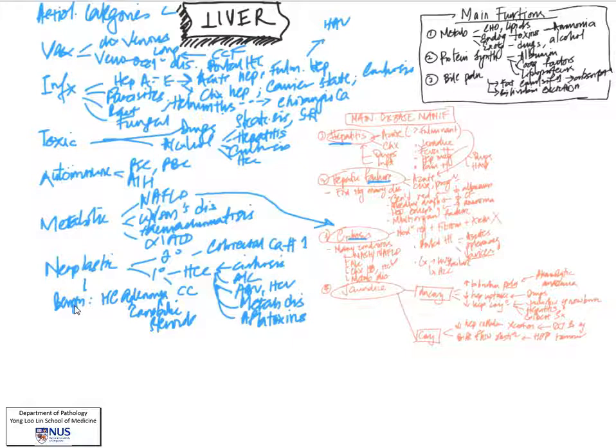Another important and fairly common benign neoplasm in the liver which does not arise from hepatocytes is hemangioma. This is a blood vessel tumor and it's benign.